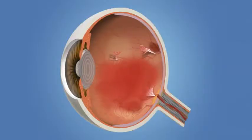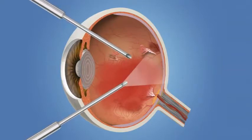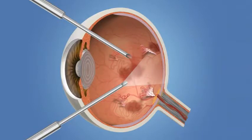In some cases with PDR, if there is bleeding into the vitreous, a procedure called a vitrectomy may be needed. Vitrectomy surgery is usually performed in the operating room on an outpatient basis. An operating microscope and small surgical instruments are used to enter the inside of the eye. Blood and scar tissue are removed. At the same time, laser may be used to prevent further bleeding and abnormal blood vessel growth.